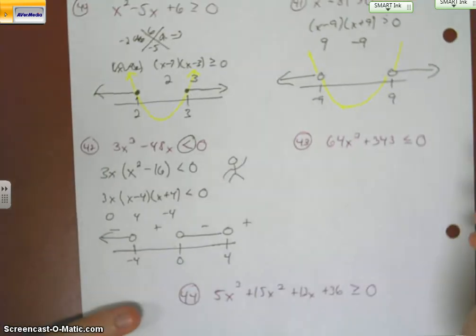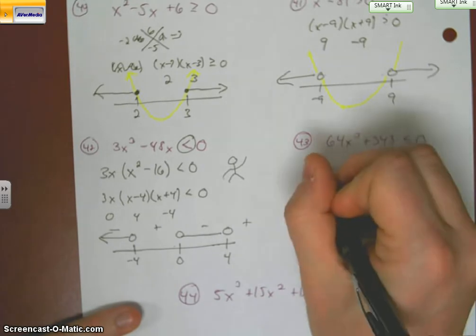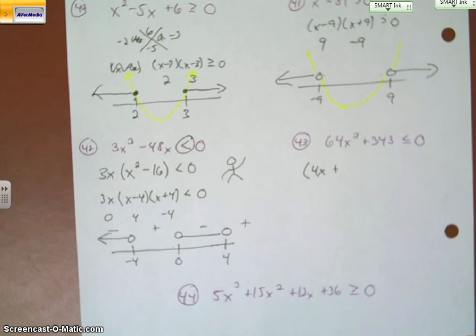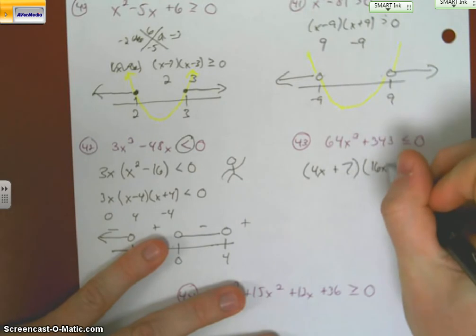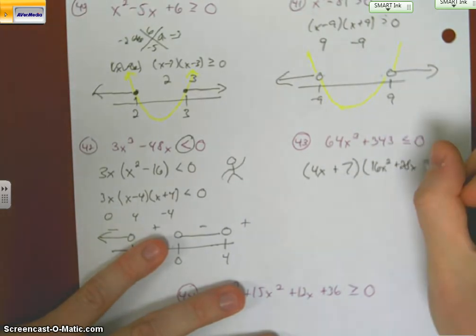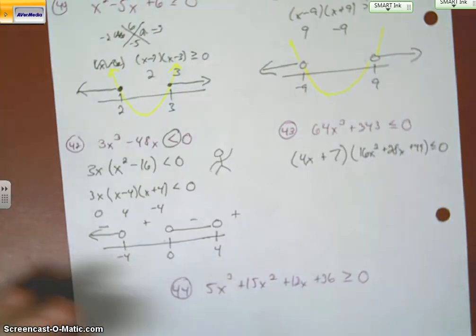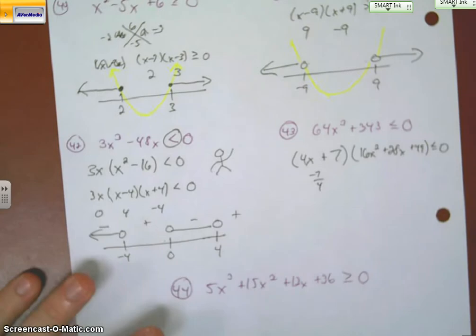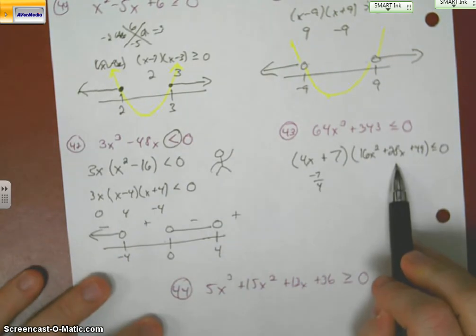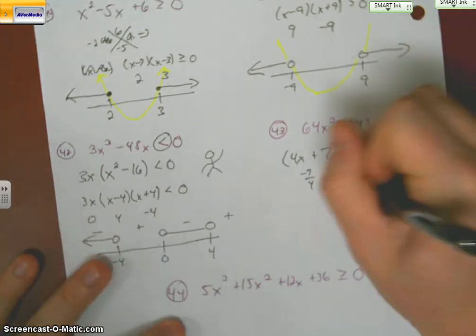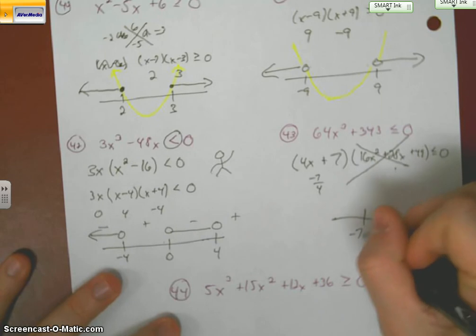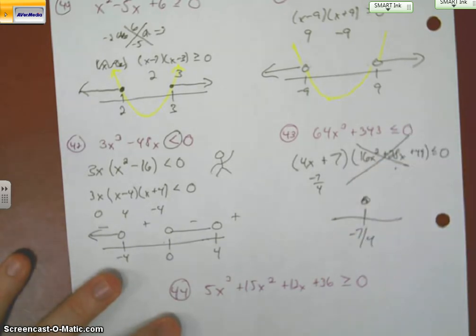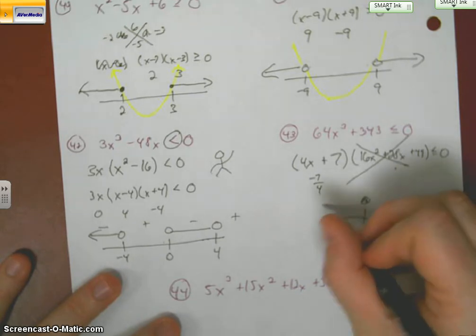Next one is a sum of cubes. 64 is a perfect cube of 4x. 343 is a perfect cube of 7. And I end up with 16x squared plus 28x plus 49 less than or equal to 0. Now here's the story. We know this is negative 7 fourths. Remember me telling you earlier that this trinomial is always going to give you an imaginary number. That imaginary number is never going to cross the x axis. So I can care less about that guy. It's not going to affect my inequality. I got 10 seconds. Okay. Close circle. And it's going to go to the left. Since it was negative.